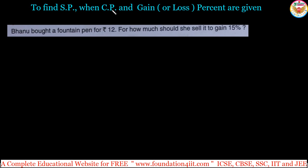To find selling price when cost price and gain or loss percentage are given, instead of all the values, either gain percentage or loss percentage and cost price are given, and we have to find the selling price directly. Let us see this question first, then I'll give the two formulas. Banu bought a fountain pen for rupees 12, and we need to find for how much she should sell it to gain 15 percent.